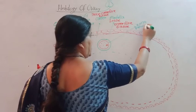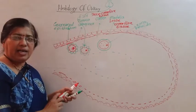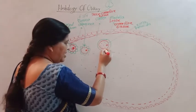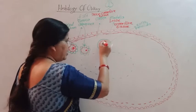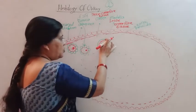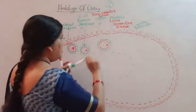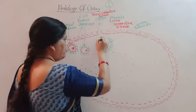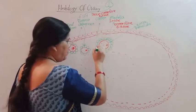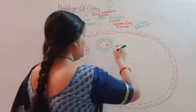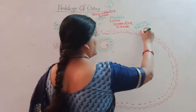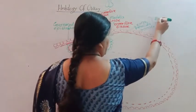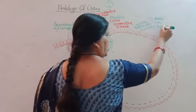This zona pellucida is a clear, transparent membrane secreted by the oocyte membrane. The zona pellucida surrounds the eccentric oocyte, and outside of it are the follicular cells. This stage is called the early primary follicle.